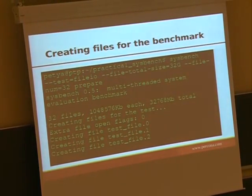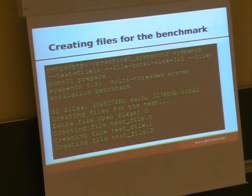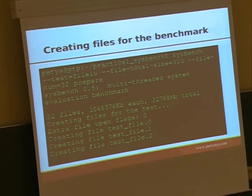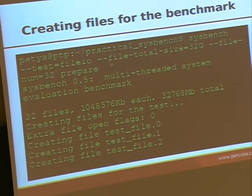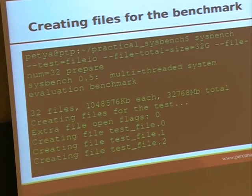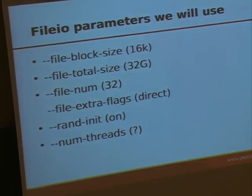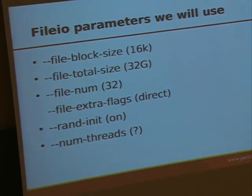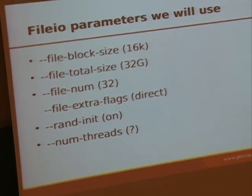So let's do a file.io benchmark. This is how you create a set of files for file.io. We create 32 gigs of files here, the number of files is 32, so each file is 1 gig, and the prepare command will create the files on which the tests will be performed. The benchmarks I will discuss were made on my laptop, so they are readily reproducible. All this was benchmarking my laptop's SSD.